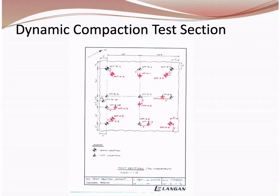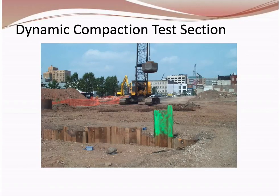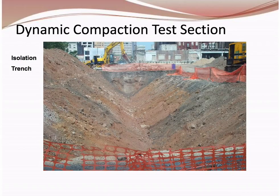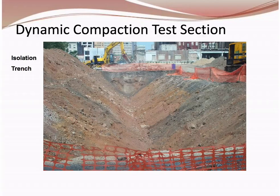For vibration control, we installed an isolation trench along one side of the test section and a sheet pile wall on another side, with vibration monitors on both sides to assess the level of mitigation from each measure. Borings and CPTs were performed before and after the improvement phase. A three-pass system was implemented — two offsetting grids on a 10-foot spacing with a third ironing pass — to mimic the anticipated production phase program.